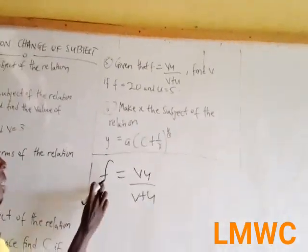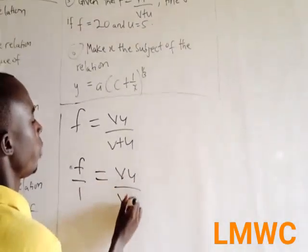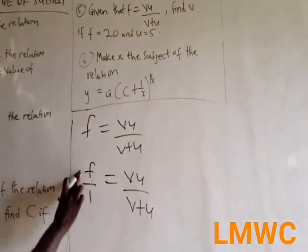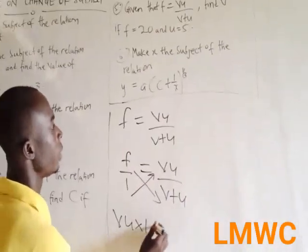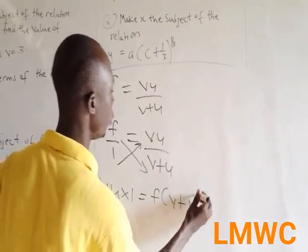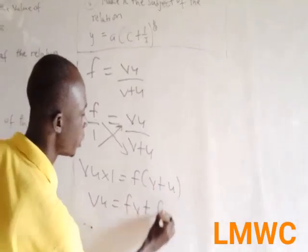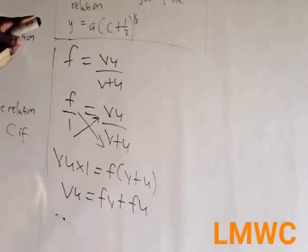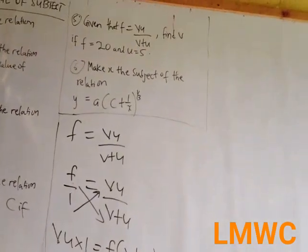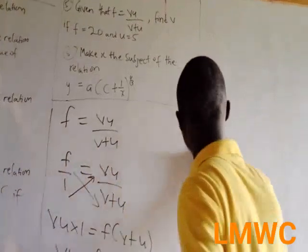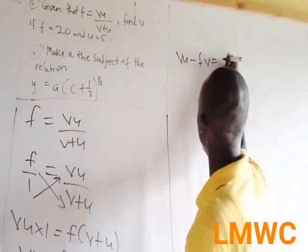So let's make v the subject. F is the same as F over 1. So F/1 = v·u over (v + u). Because every whole number is over 1. You cross-multiply: v·u times 1 = F times (v + u). So v·u = F·v + F·u. You group v on one side: v·u minus F·v = F·u.